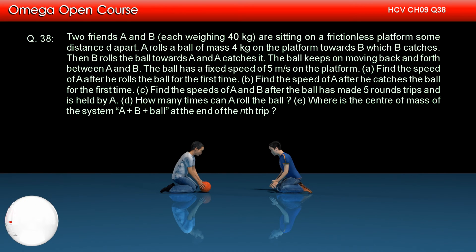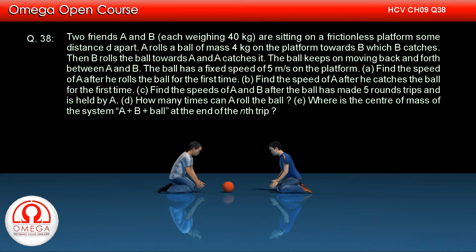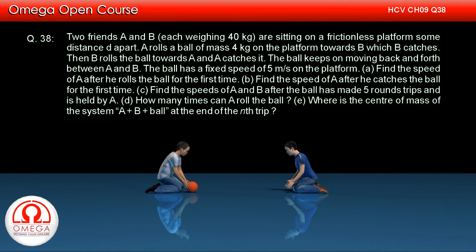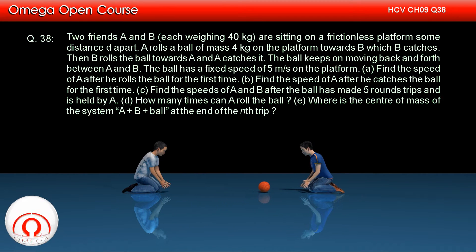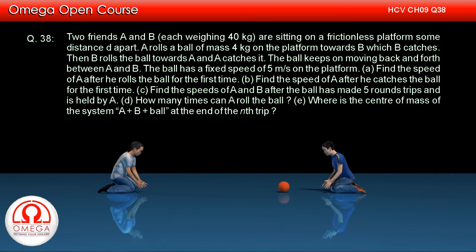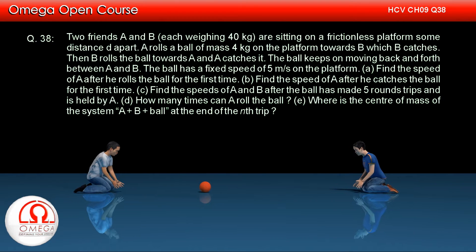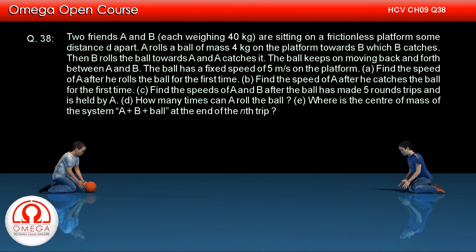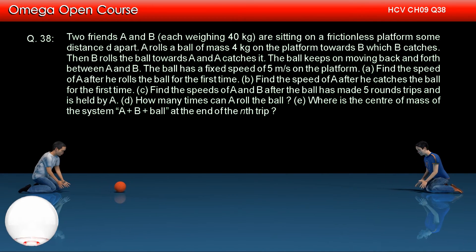Two friends A and B, each of mass 40 kg, are sitting on a frictionless platform some distance D apart. A rolls a ball of mass 4 kg on the platform towards B, which B catches. Then B rolls the ball towards A and A catches it. The ball keeps on moving back and forth between A and B. The ball has a fixed speed of 5 meters per second on the platform.